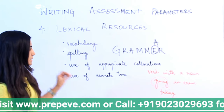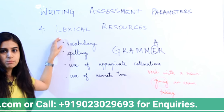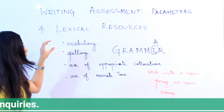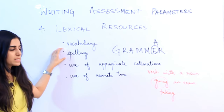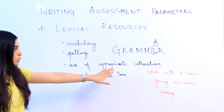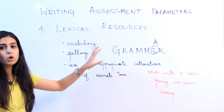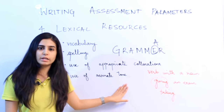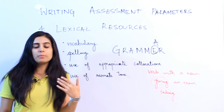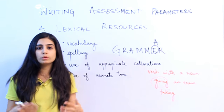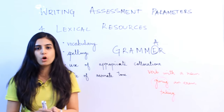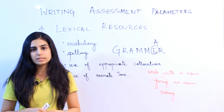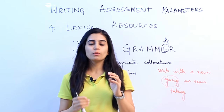The last factor under lexical resources is accurate tone. In all your writings except the informal letter, you must use formal tone and formal language. Whether it's any kind of essay, a formal letter, or a semi-formal letter, do not use casual or friendly language — use formal tone. So vocabulary, correct spellings, appropriate collocations, and accurate tone make up your lexical resources parameter.